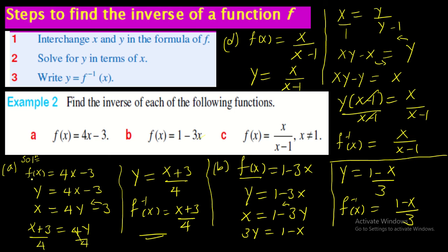Let me recap example (a): f(x) = 4x - 3. Write f(x) as y, then exchange x and y to get x = 4y - 3. Shift the -3 to the left side — it becomes +3 — giving x + 3 = 4y. Divide both sides by 4: y = (x + 3)/4. This y is the inverse, so f⁻¹(x) = (x + 3)/4.